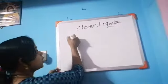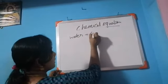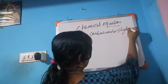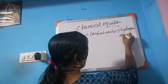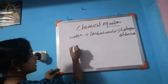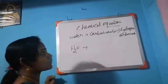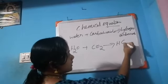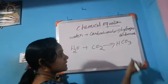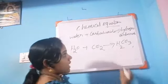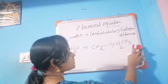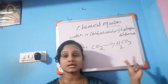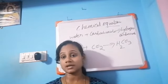Next example: water reacts with carbon dioxide to form hydrogen carbonate. Water formula is H₂O, carbon dioxide is CO₂. Hydrogen valency is 1 and carbonate valency is 2, so the formula of hydrogen carbonate is H₂CO₃. So: H₂O + CO₂ → H₂CO₃.